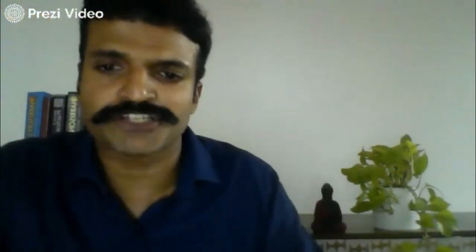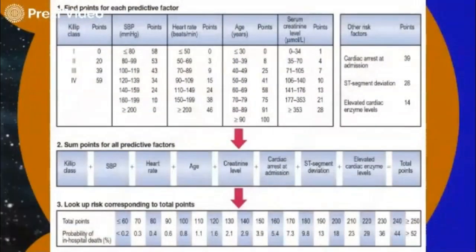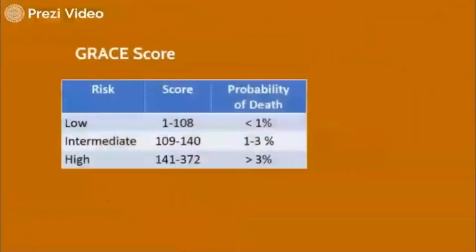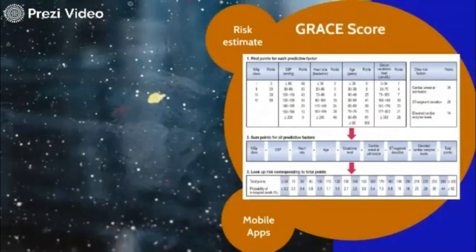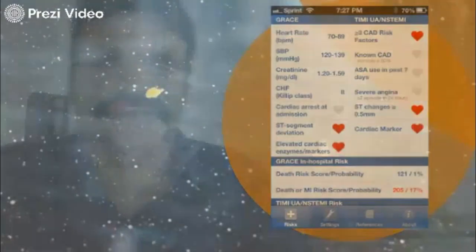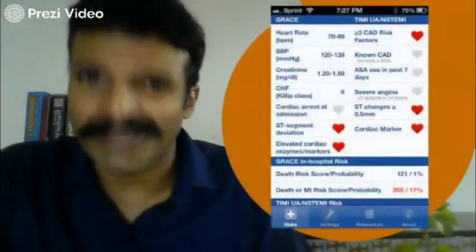Depending upon the total score, you can classify these patients into different risk groups. You are low risk if your score is less than 108; between 108 and 140 is intermediate risk; and 141 or above is considered high risk. As the risk increases, it is directly proportional to the probability of death. It is very easy to calculate the GRACE score in your clinics because it is available as a mobile app.